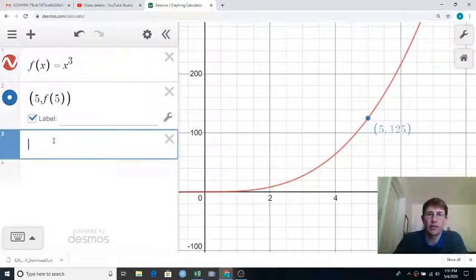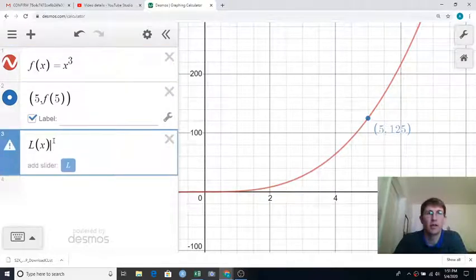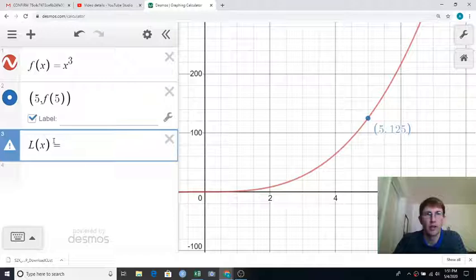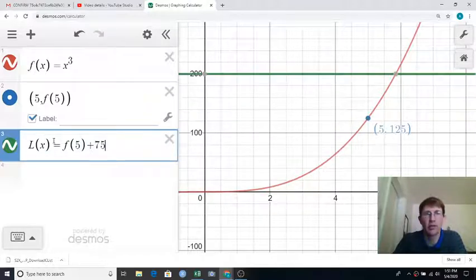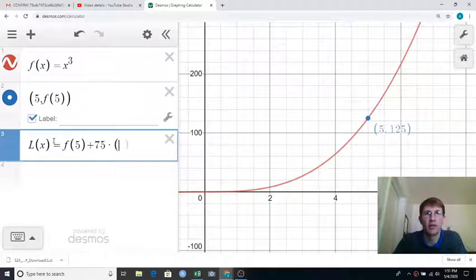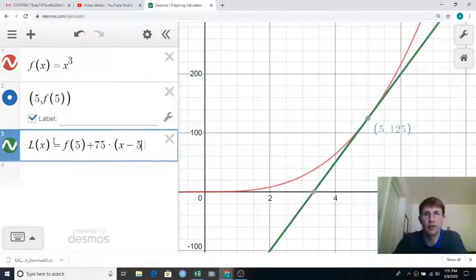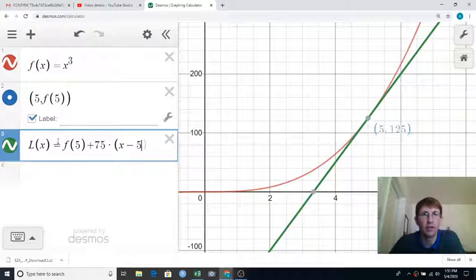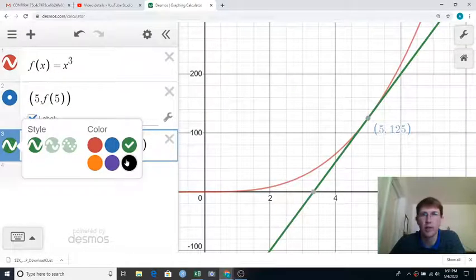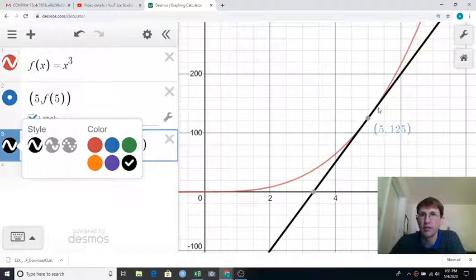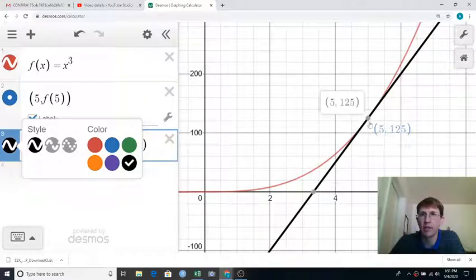And we had figured out that our tangent line formula, L of x, was f of 5 plus, and now f prime of 5, we did a lot of work. We figured out it was 75 times x minus 5. And let's put that in black. So our original curve is in red there, and our tangent line formula is in black.